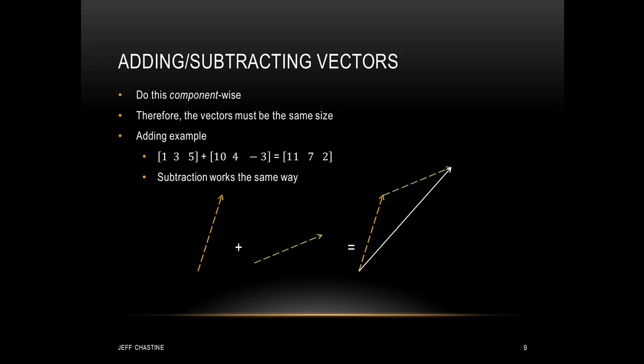There are some basic mathematical operations we can do with vectors, starting with adding and subtracting. When you add or subtract vectors, you do this component-wise, which means the vectors have to be of the same size. For example, if we add the vectors (1, 3, 5) and (10, 4, -3), we add component-wise: 1+10, 3+4, and 5+(-3), giving us the vector (11, 7, 2).